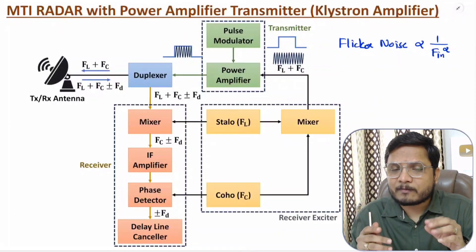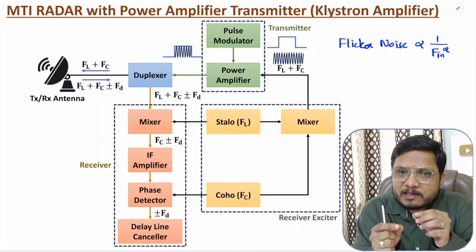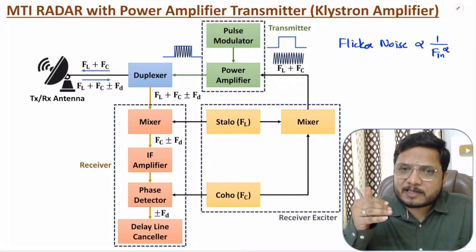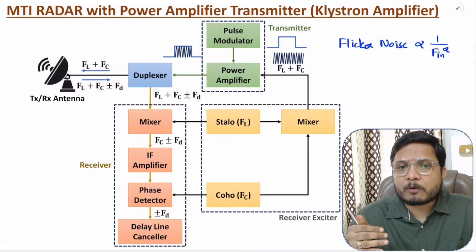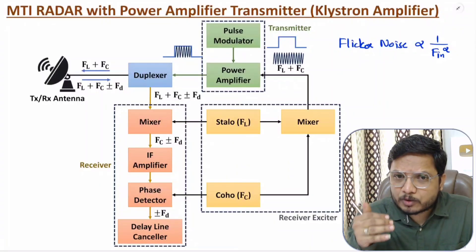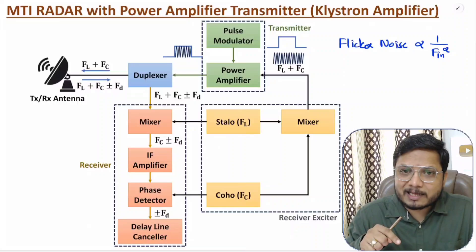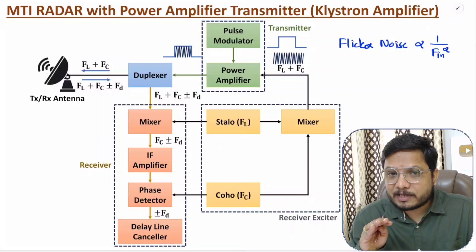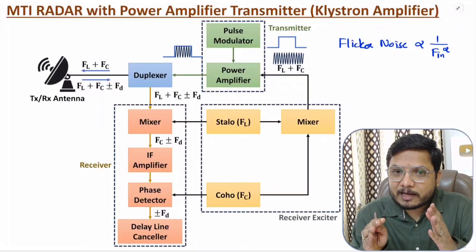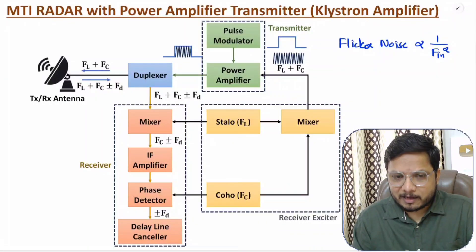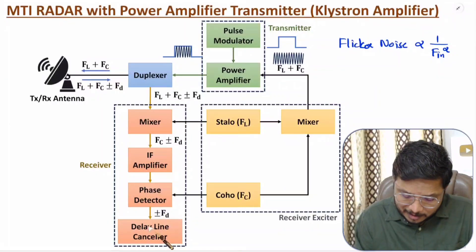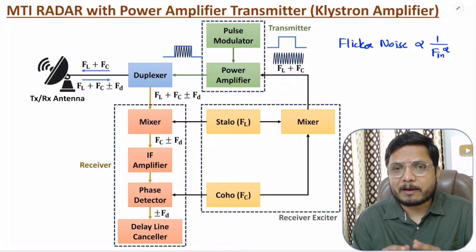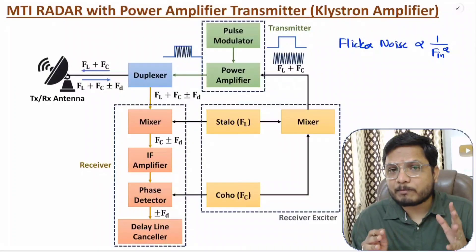There will be echoes from both stationary and moving objects. With the delay line canceller, we can eliminate echoes from stationary objects and identify only the moving objects. I'll explain the delay line canceller in great detail in a future video. This is how the MTI radar with power amplifier transmitter functions.